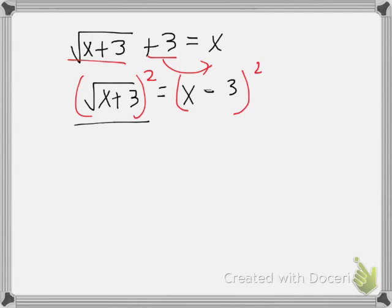On the left side here, what does this mean in terms of the square and the square root? Well, they undo each other. This is why we are using the square, to get rid of the radical.